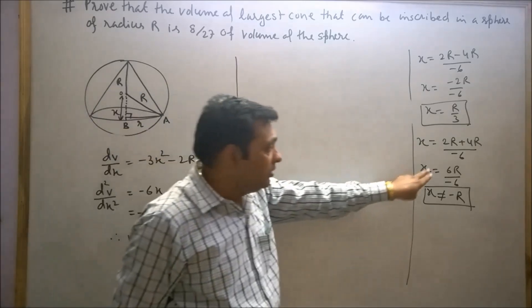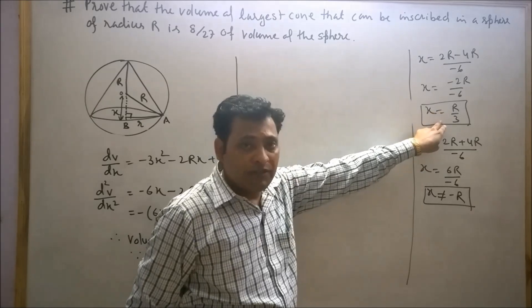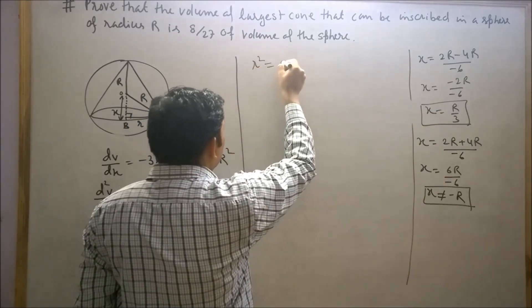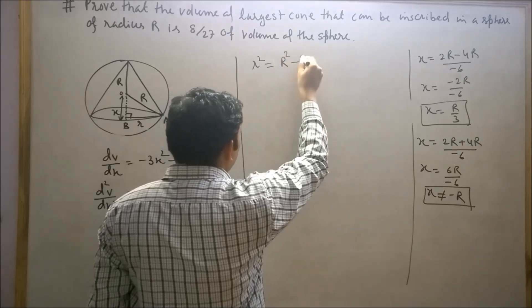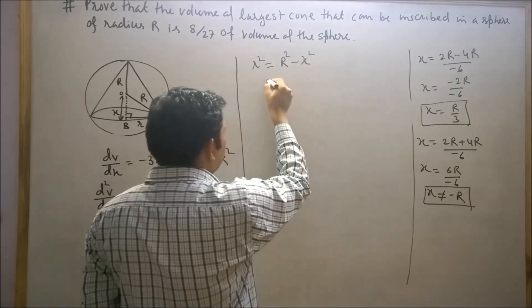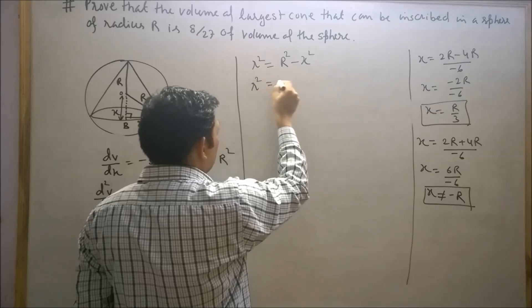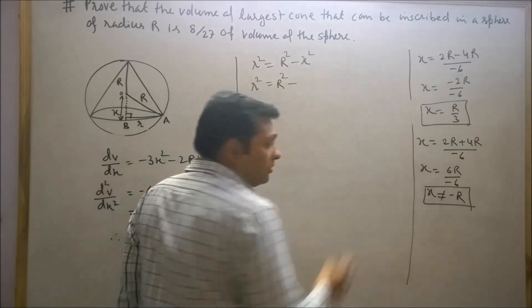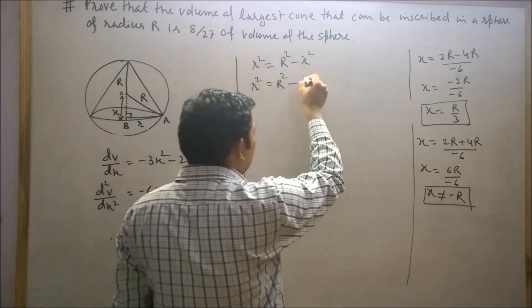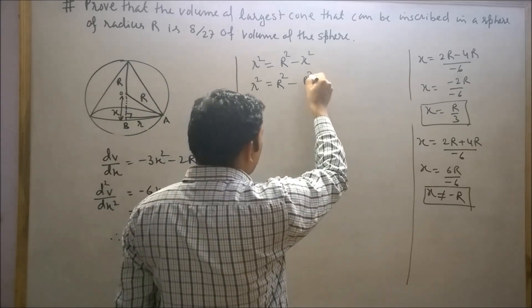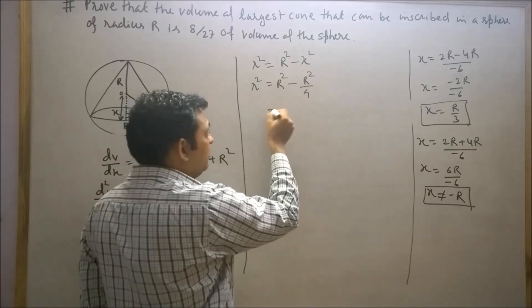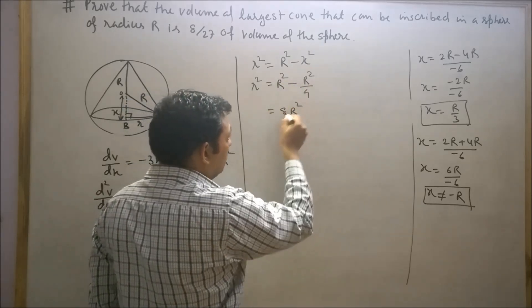Here we have obtained x equals R/3 and r² equals capital R² minus x². So r² will equal R² minus (R/3)², which is R² minus R²/9, equals 8R²/9.